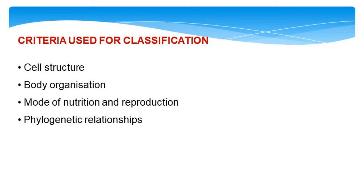Let us see the criteria used for classification, which includes cell structure, body organization, the mode of nutrition and reproduction, and the phylogenetic relationships.